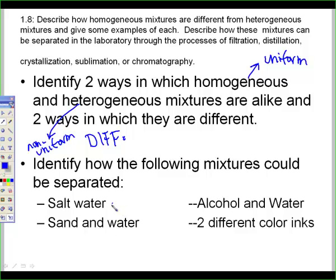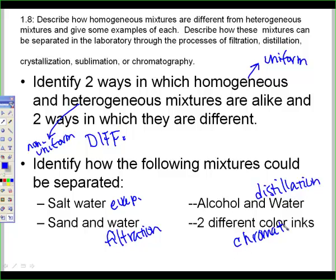Okay. Homogenous and heterogeneous are alike and different. So alike, they can be made and separated by physical change. And they both have components that you can identify. For different, homogenous are uniform. Where heterogeneous are non-uniform. And I should have just said one way. That's really the major way. How could these be separated? Saltwater evaporation. Sand and water filtration. Alcohol and water distillation. And two different color eeks, chromatography. There's a video about chromatography on the blog if you're not sure about that. The rest are pretty straightforward, I think.